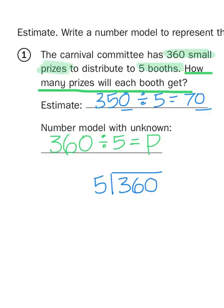But this is where my estimate comes in handy, because I already know that my answer is going to be at least as big as 70, because five times seven is 35, so five times seven tens is going to give me 35 tens, or 350. So I can just skip ahead to 70, because 70 times five is 350.